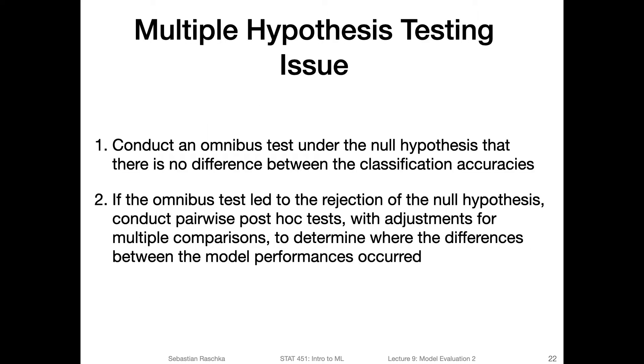So assume we have k different models that we will evaluate. If we do a pairwise test on each pair of models, we would then end up with k times k minus one divided by two. That's all the combinations we could have for k models, which can be quite a large number, and this can become problematic.